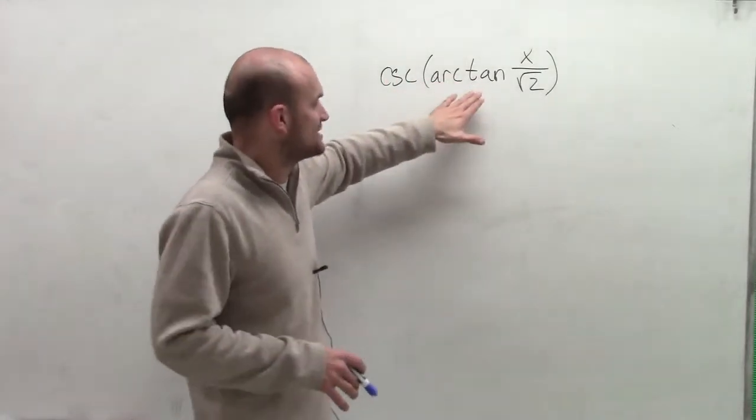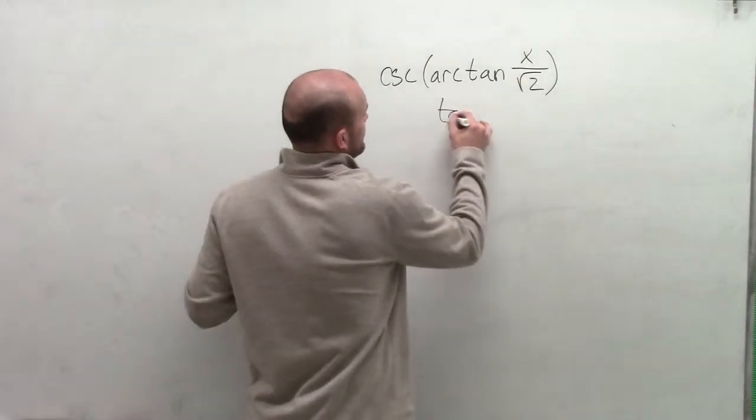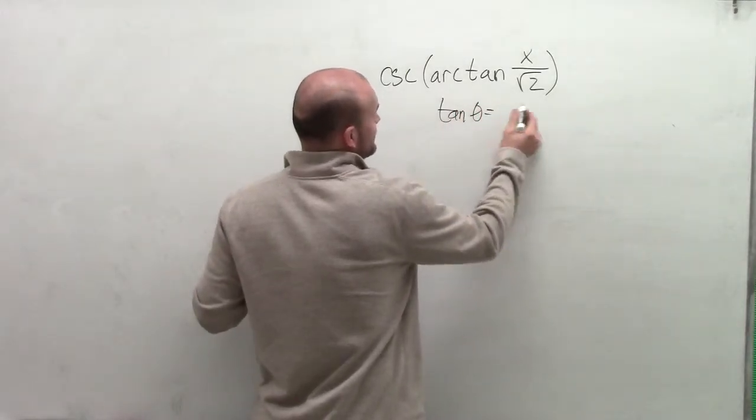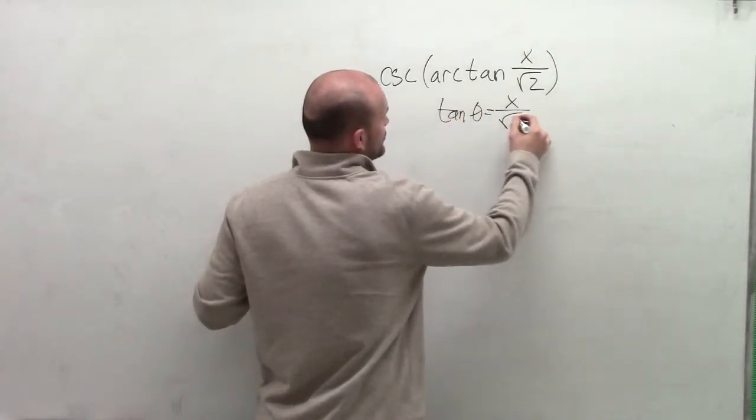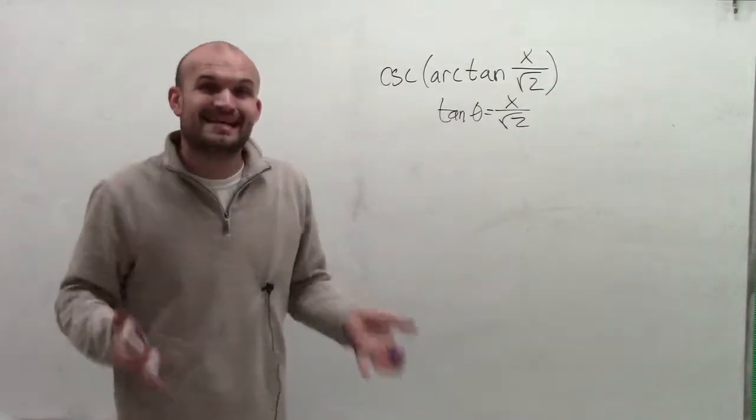So to find the inverse tangent, remember this says tangent of an angle is equal to x over the square root of 2. And I need to figure out what is that angle.